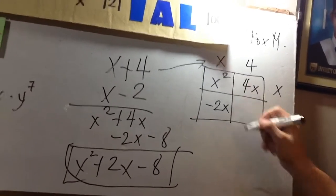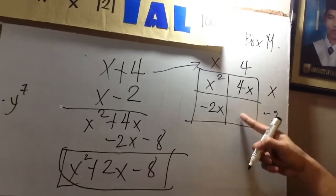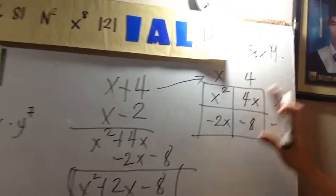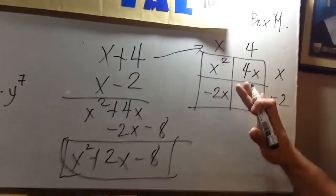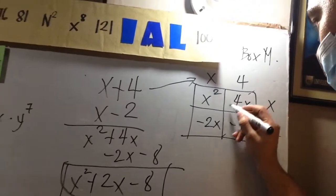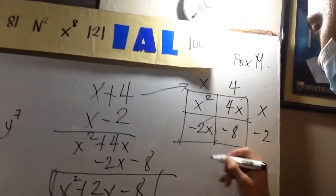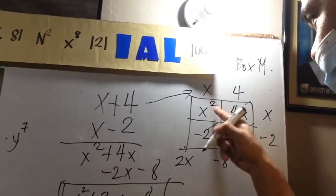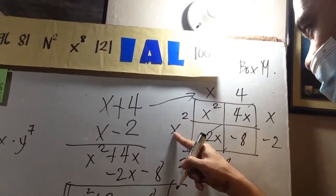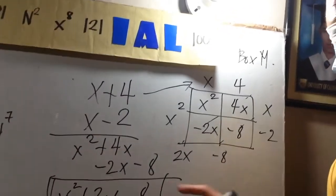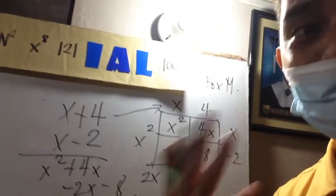Then it becomes x times x is x squared. Then 4 times x will be 4x. Can you still see? Negative 2 times x which is negative 2x. Then 4 times negative 2 will be negative 8. When you see the contents like that, what you'll do is add diagonally. So add diagonal - it becomes negative 8, then 4 minus 2 will be 2x, then bring down x squared, so x squared plus 2x.